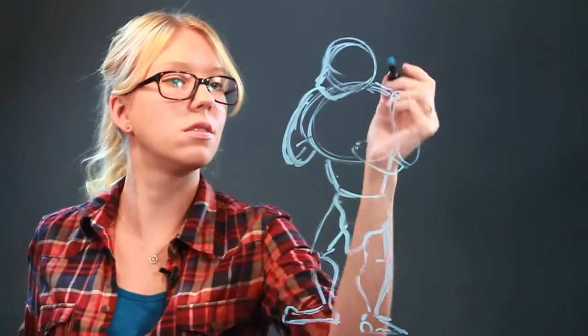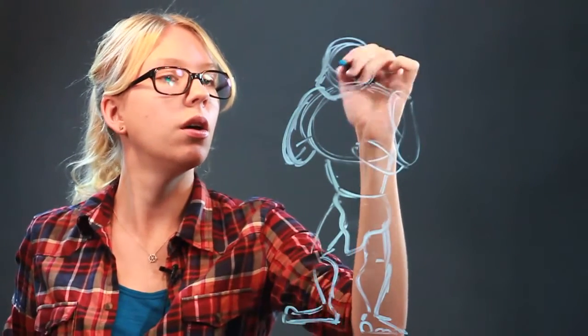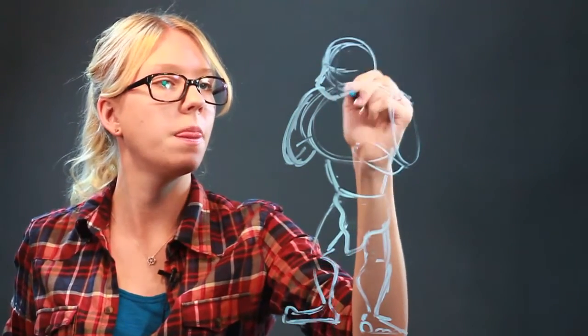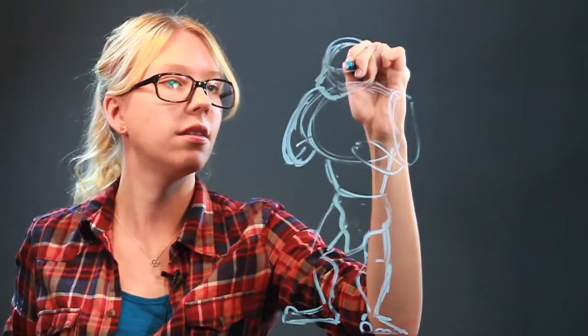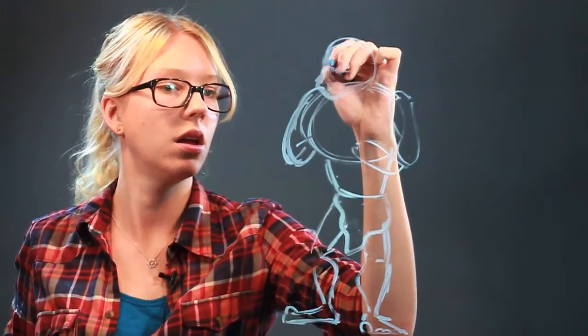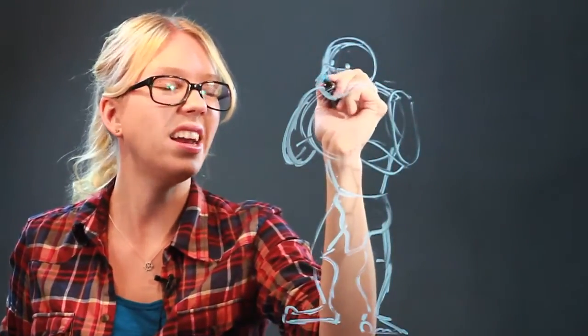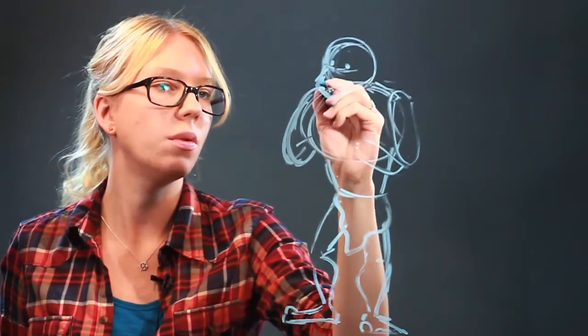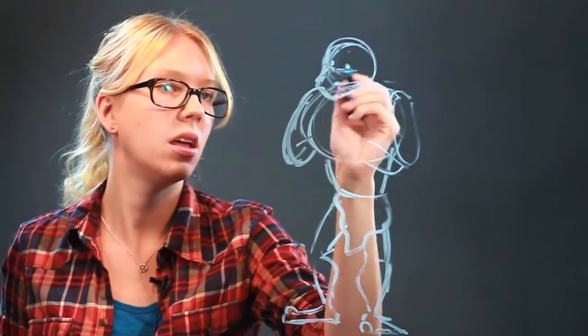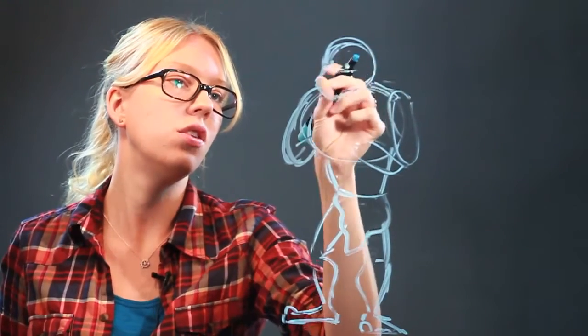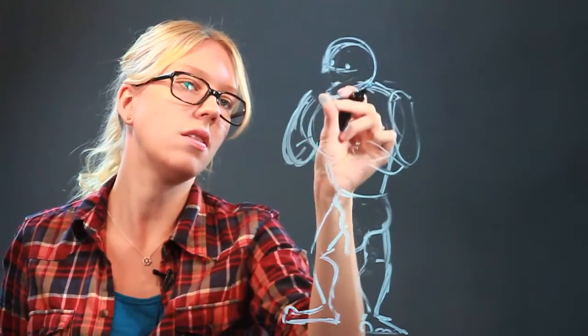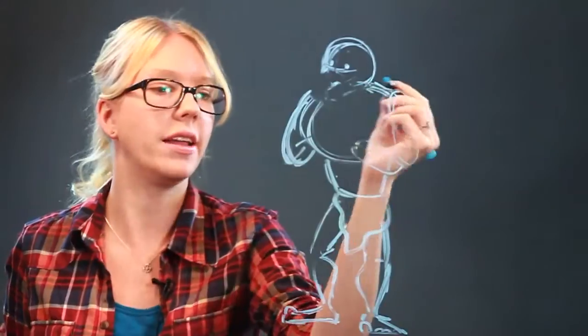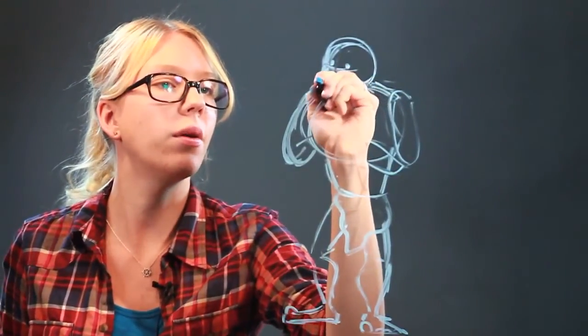And for his head, I'm going to give him some little beady eyes, kind of like a cow snout. So he's going to have some big nostrils. Let's get rid of some of these lines. There's a lot of lines there. Some cow nostrils.